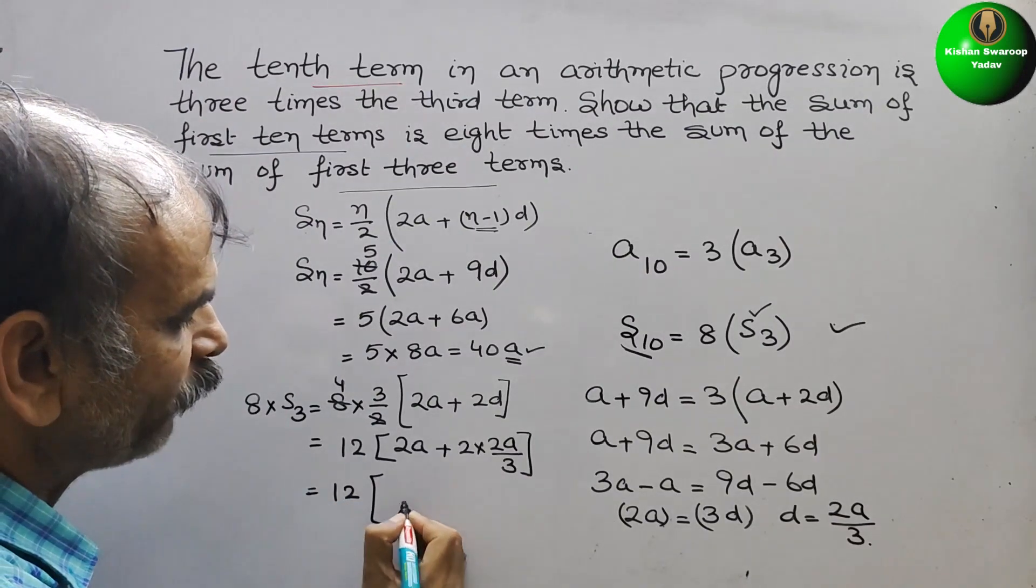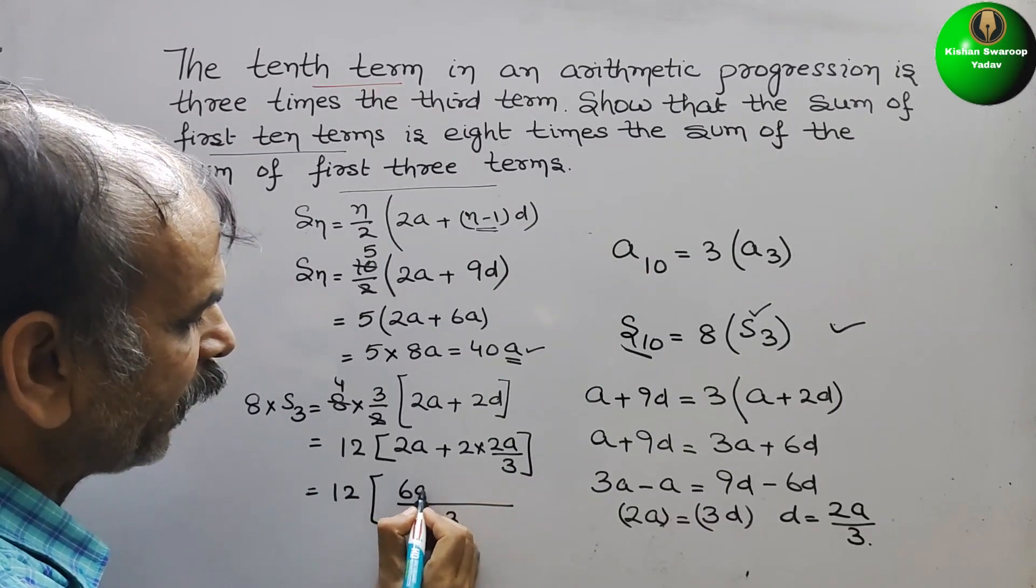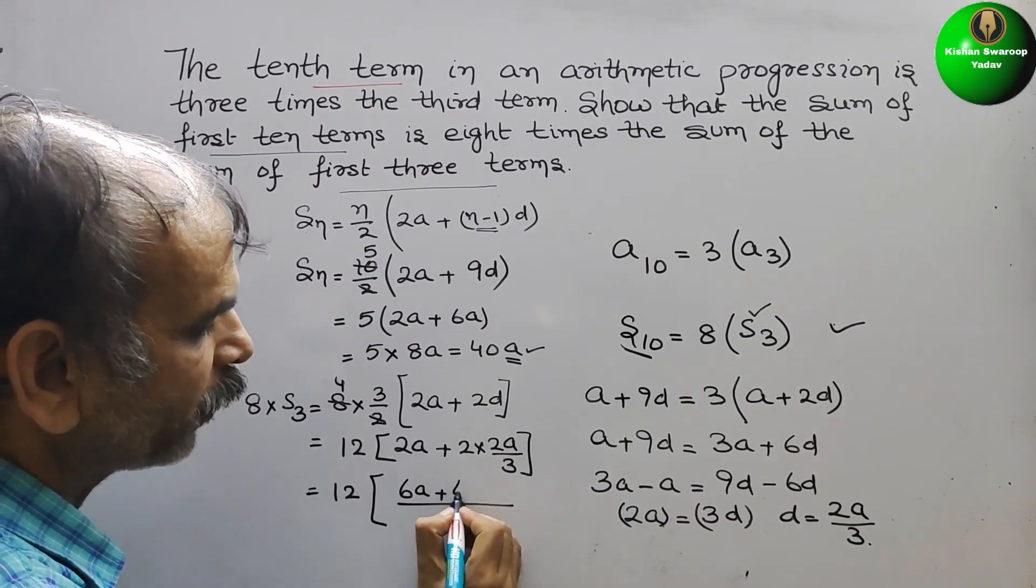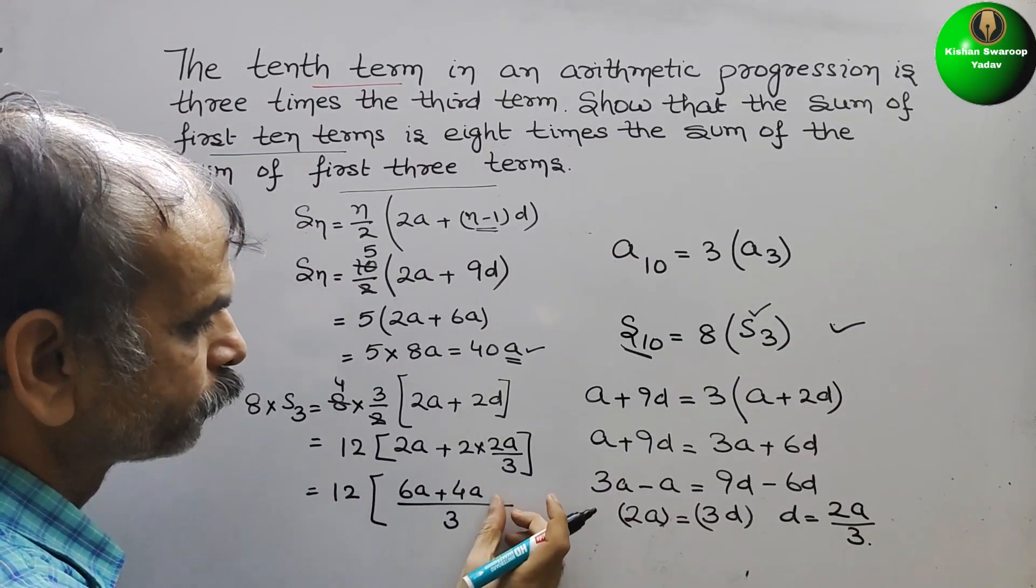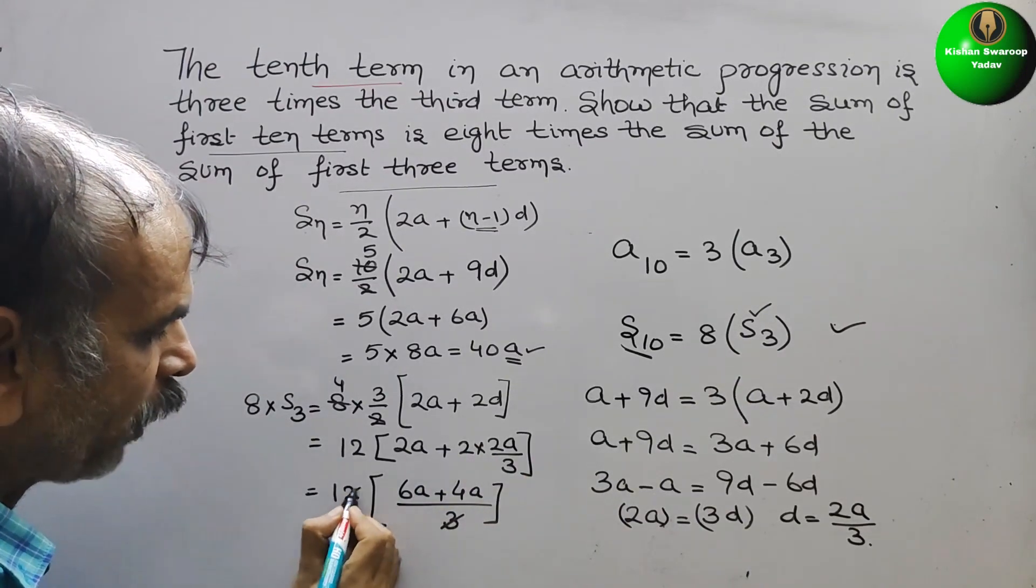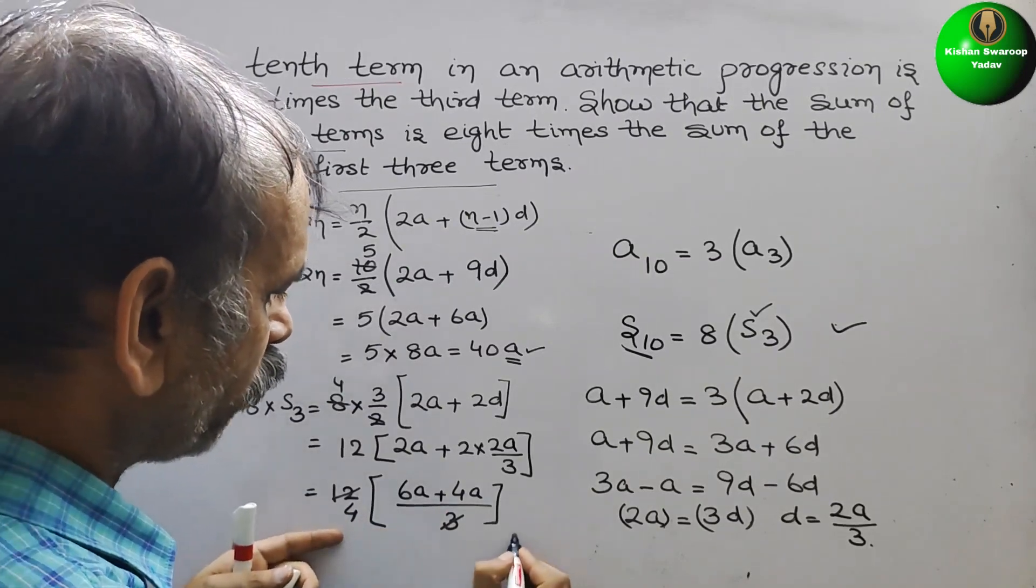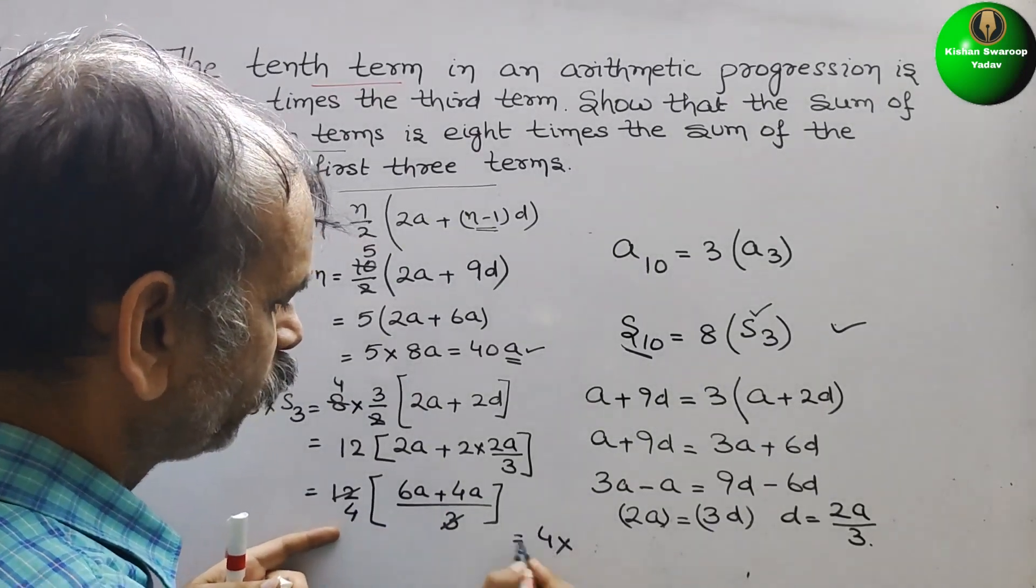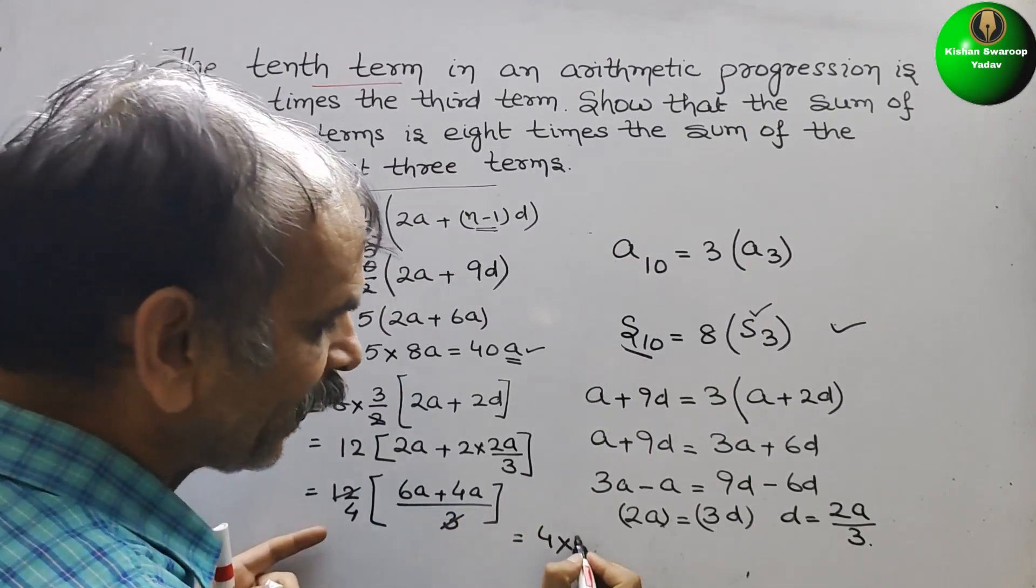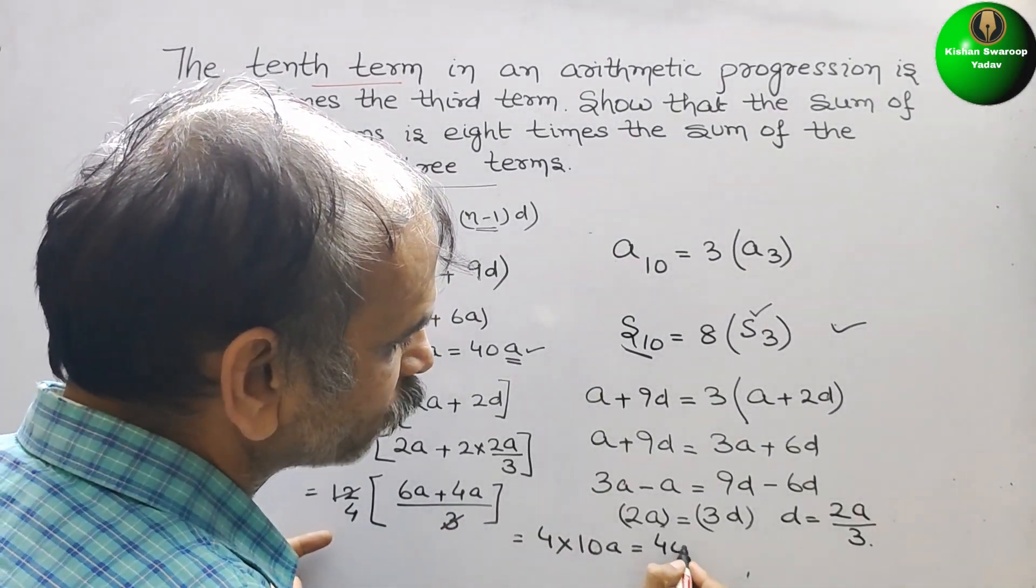And here we will take the LCM as 3. So here we will get 6A plus 4A. Now 3 and 12 will go by 4. So now it will be 4 into 6A plus 4 is 10A, that is equal to 40A.